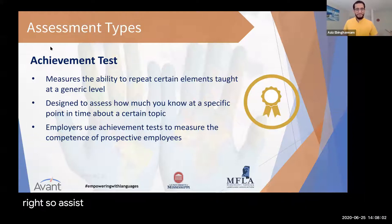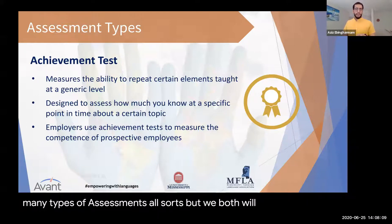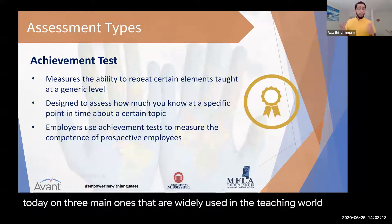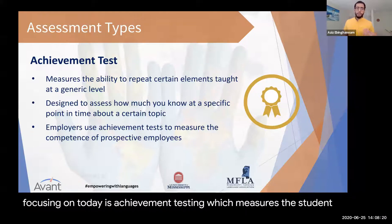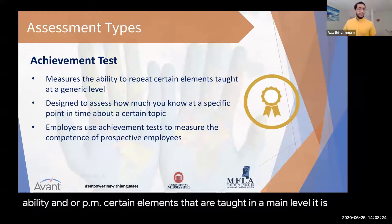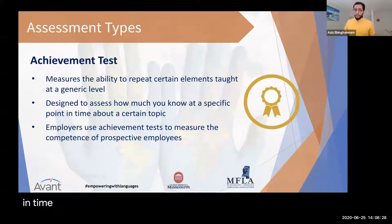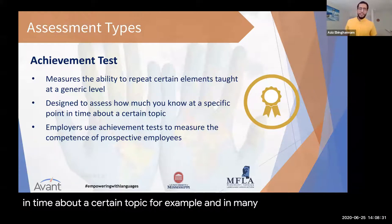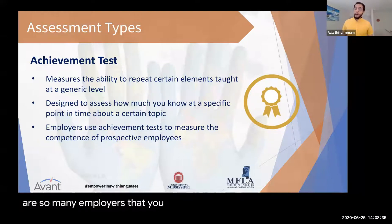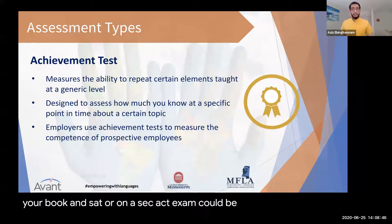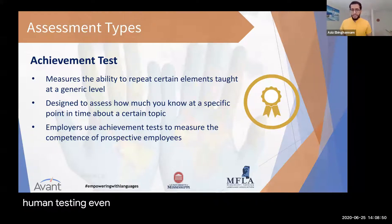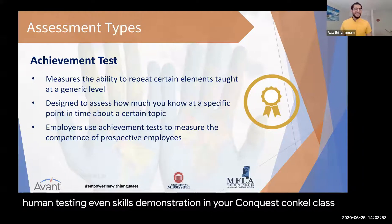There are many types of assessments, but we will focus on three main ones widely used in teaching. The first is achievement testing, which measures a student's ability to repeat certain elements taught at the main level. It is designed to assess how much a person knows at a specific point in time about a certain topic. Many employers also use achievement testing to measure competency in hiring. Examples include a chapter exam, an SAT or ACT, or even a skills demonstration in a Kung Fu class.